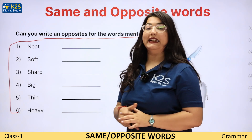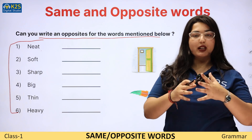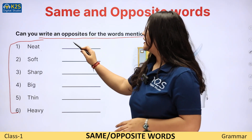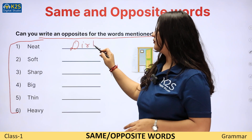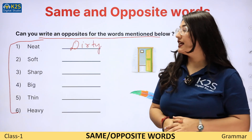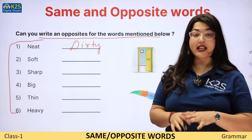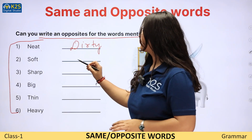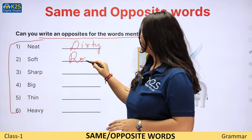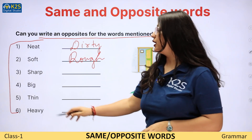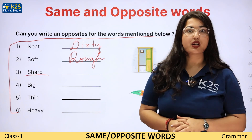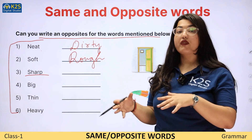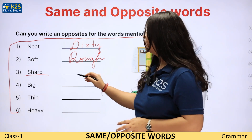So now let's do the first one. Neat — neat means bilkul saaf. And the opposite of neat would be dirty. The next one is soft — soft means mulayim. The opposite of soft would be rough. Now the third one is sharp — sharp means pehna ya kaafi teekha. So the opposite of sharp would be blunt.